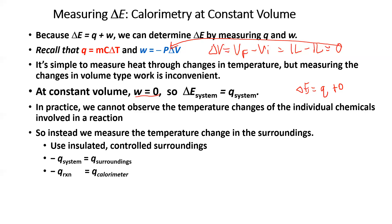So we can use an insulated, controlled surrounding environment. What we would see is that the Q of the system is equal to the Q of the surroundings, just opposite in direction. So really, the heat of the reaction is equal in magnitude and opposite in direction to the heat of the calorimeter. That's how we calculate the change in energy of a reaction at constant volume.